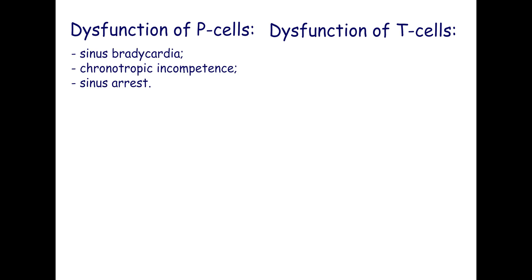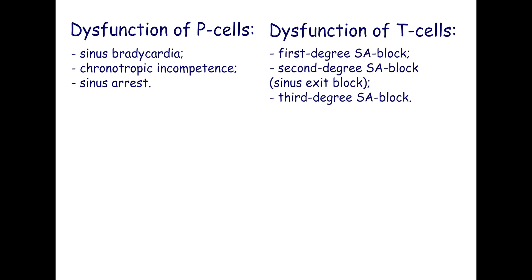Dysfunction of the P-cells manifests as chronotropic incompetence and sinus arrest. Dysfunction of the T-cells manifests as first-degree, second-degree, and third-degree sinoatrial blocks.